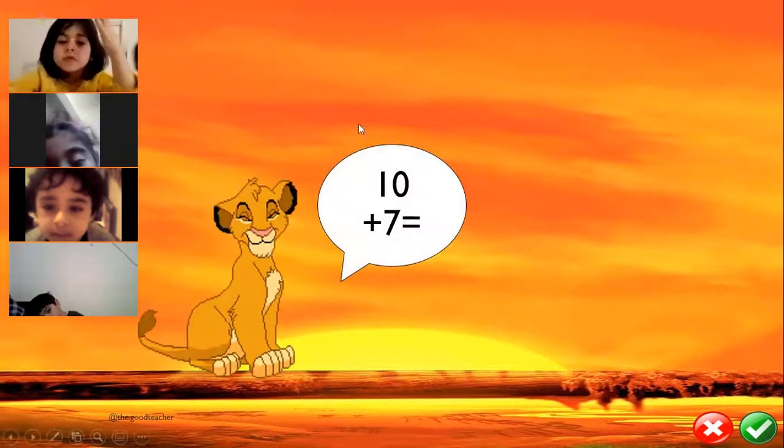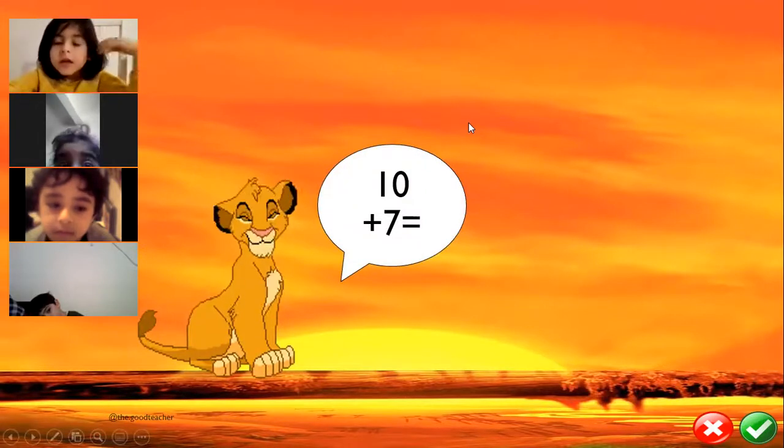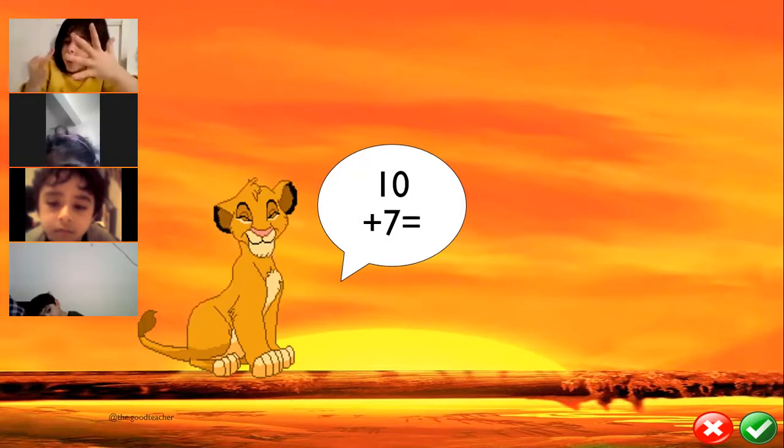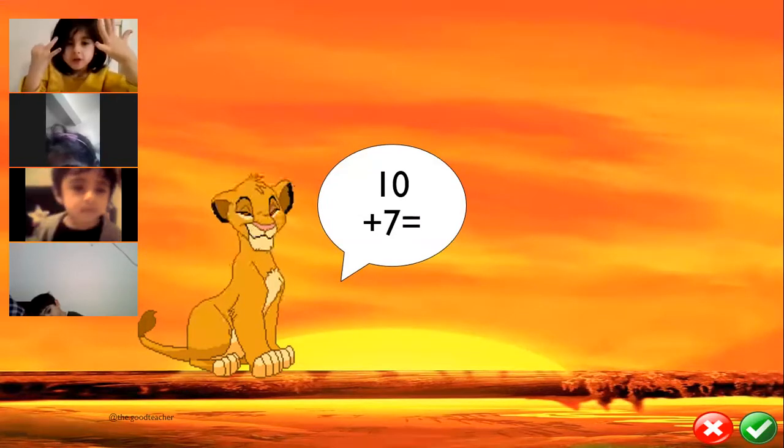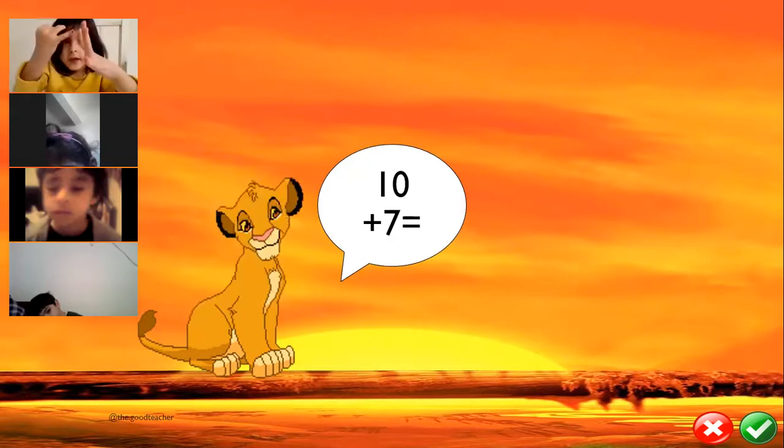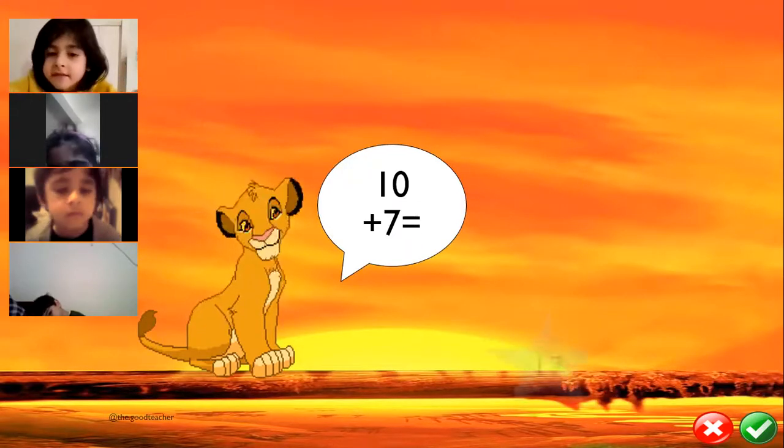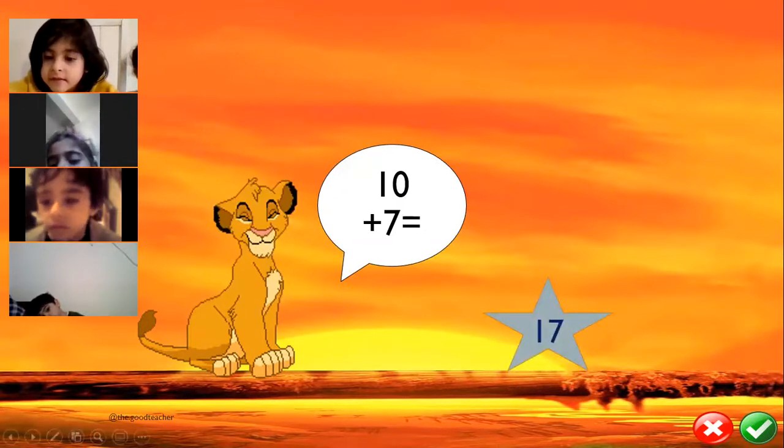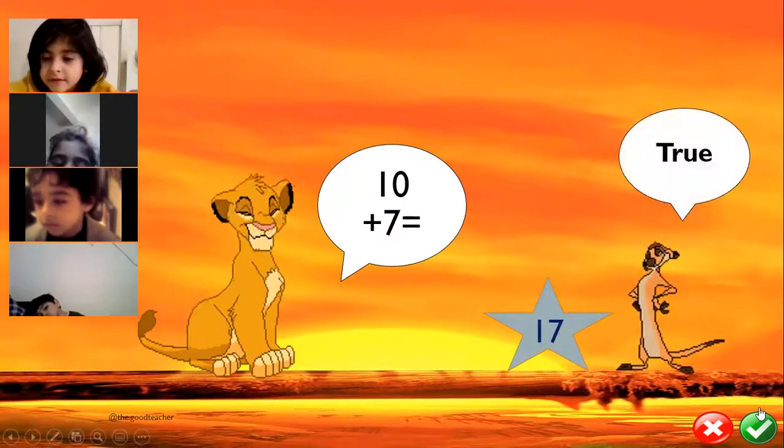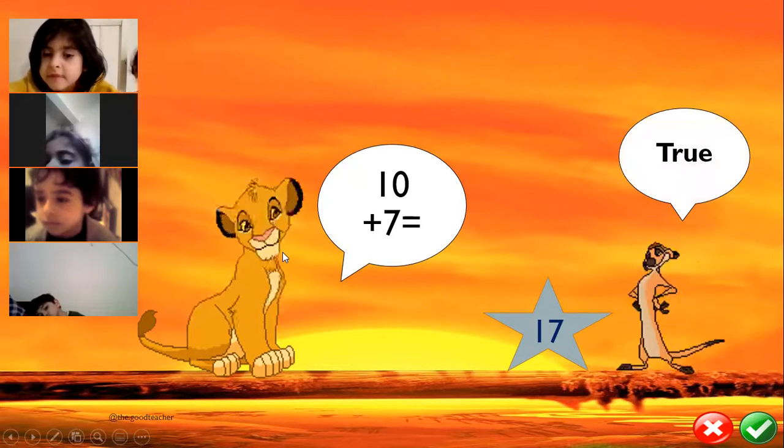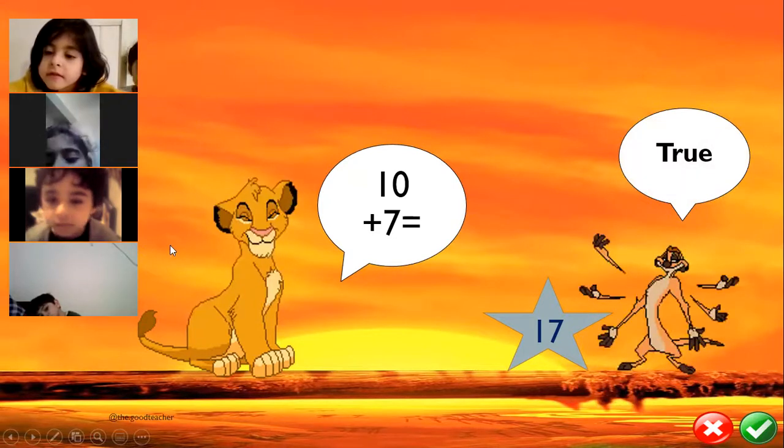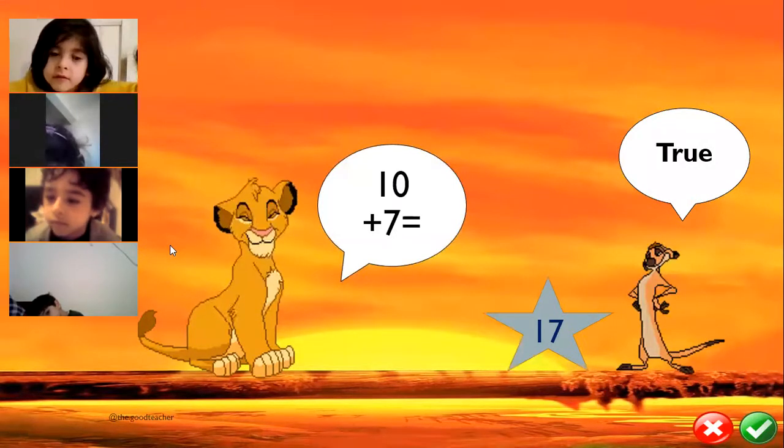Okay Hatif. Ten plus seven. I put ten in my mind and seven in my hand. After 10, 11, 12, 13, 14, 15, 16, 17. Let's see, yeah, excellent, bravo! Thank you, keep your mic and close your cage.